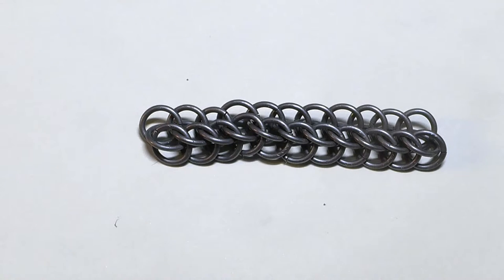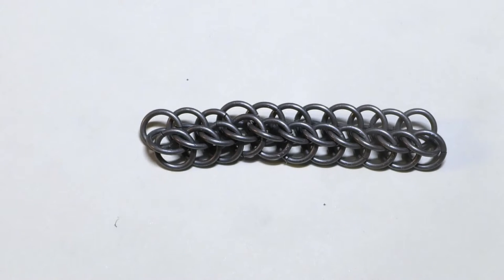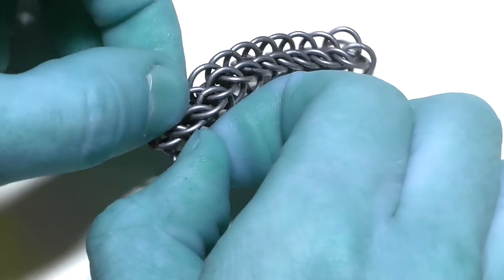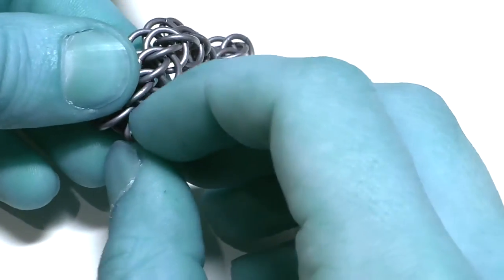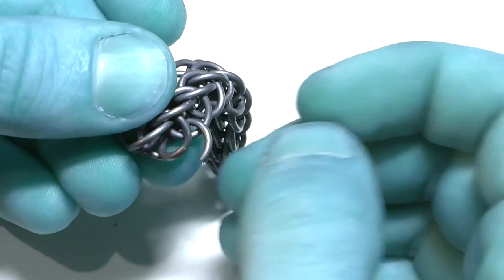The first ring of the next row will go through these two rings. This one and this one. And it will go just like that. Here and here and here. See? Let's close the ring.